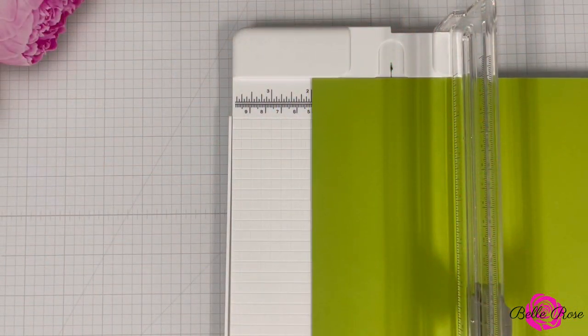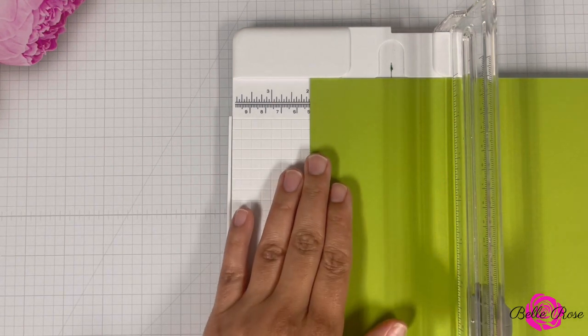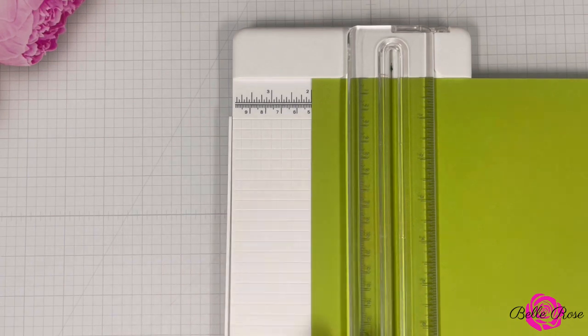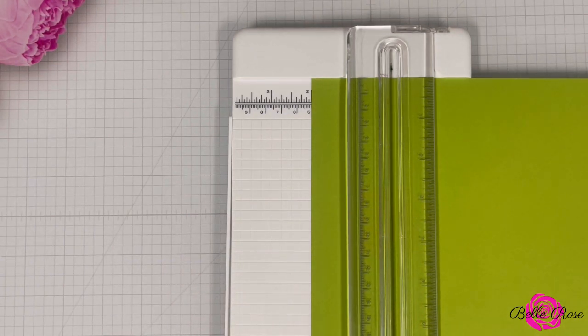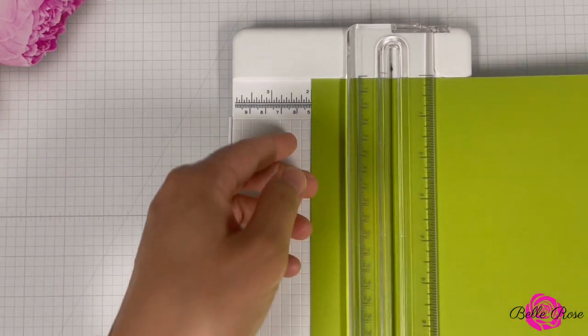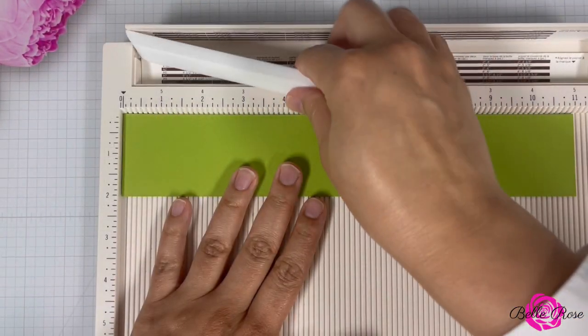Now it's time to create our pop-up card base. So I brought in a piece of cardstock, which is 8 1⁄2 by 11 inches. I'm then going to cut it at 2 inches. So when I'm done, this will be a 2 inch by 11 inch piece of cardstock.